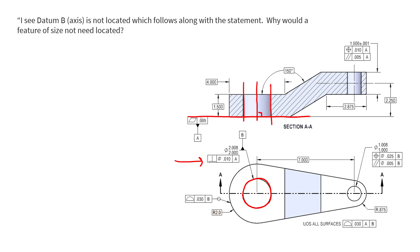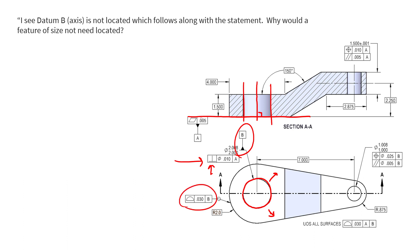So if we're controlling the perpendicularity using that symbol, we know we're not controlling the location. Nothing controls the location of this hole — it can drift wherever it wants. That may seem backwards, because if this drifts too far it might seem like we'd have a thin wall. But remember, this hole is being identified as datum feature B with this datum feature symbol here. If this hole drifts, the profile is with respect to B.